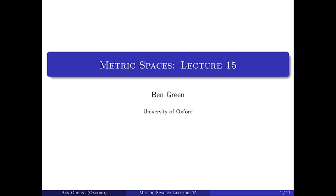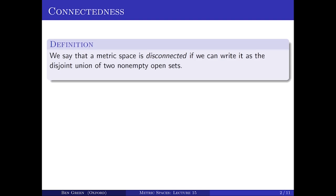In this lecture, we'll look at what's called connectedness on a metric space. To define what it means to be connected, we'll first say what it means to not be connected. We say that a metric space is disconnected if you can separate it into two different blobs — that is, if you can write it as the disjoint union of two non-empty open sets. A space is connected if you can't do that, so if it's not disconnected.